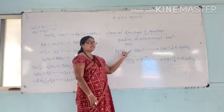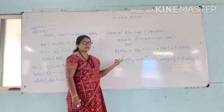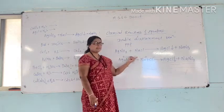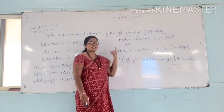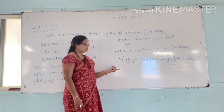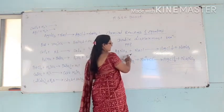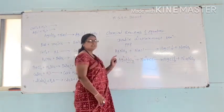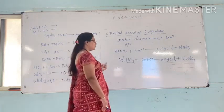There is exchange of ions of the reactants and formation of PPT. This type of reaction is known as double displacement reaction: AgNO₃ plus NaCl gives AgCl plus NaNO₃.